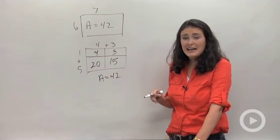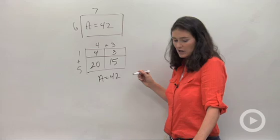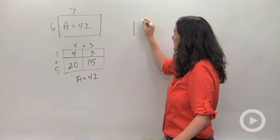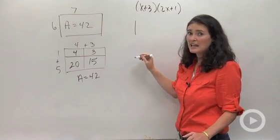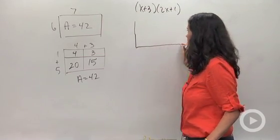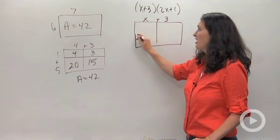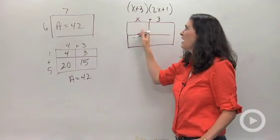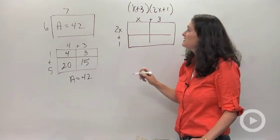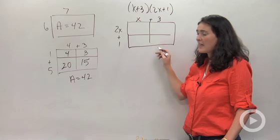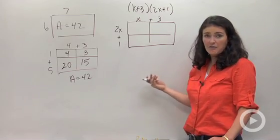So what that means is that I can use this idea of broken rectangles to multiply binomials. Here's what I mean. I could do the product x plus 3 times 2x plus 1 by writing it as a rectangle. I'm going to call this top x plus 3. Notice my drawing isn't to scale, but that's okay. I'm just going to have my products be in here. 2x plus 1 is going to be my side lengths. So now when I multiply each of these four things and add them together, I'll get the same answer that I would have gotten had I foiled.